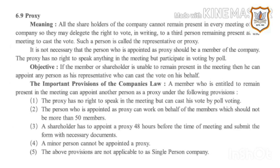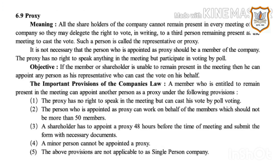The next topic is proxy. All the shareholders of the company cannot remain present in every meeting. So they may delegate the right to vote in writing to a third person, who remains present at the meeting to cast the vote. Such a person is called a representative or proxy. It is not necessary that the person appointed as proxy be a member of the company. The proxy has no right to speak in the meeting but can participate in voting by poll. If a member or shareholder is unable to remain present in the meeting, he can appoint any person as his representative to cast the vote on his behalf.